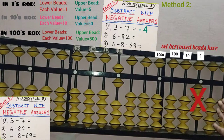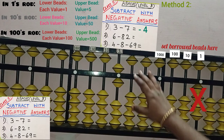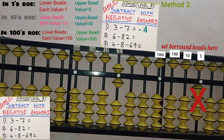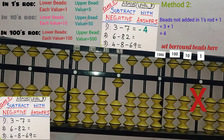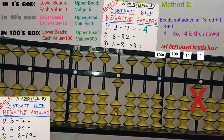This is the first method. I will also explain the second method to find negative answers. In the second method, no need to see the right side part. Just take this 6 — these are already added beads. Now you need to take the beads which are not added, that is 3 — 1, 2, 3 beads are not added — plus 1. Finally, we need to add with 1. 3 plus 1 equals 4. Borrowed beads are not written, so minus 4 is the answer. I explained 2 methods for finding negative answers. You can take either of these 2 methods. Hence, 3 minus 7 equals minus 4.